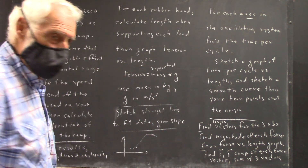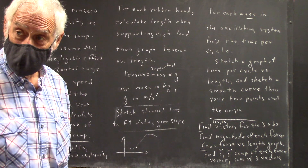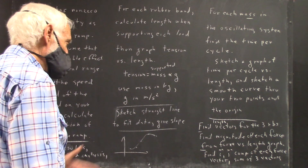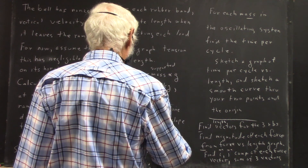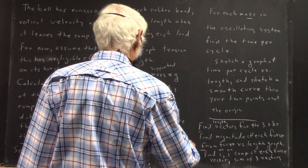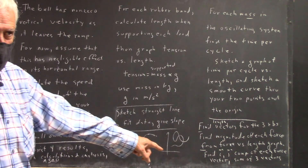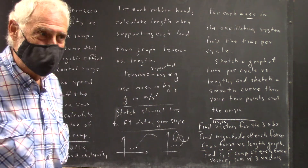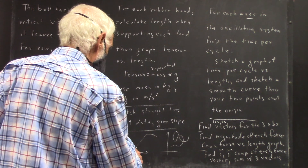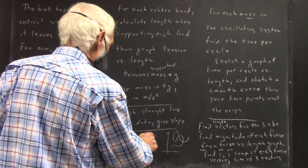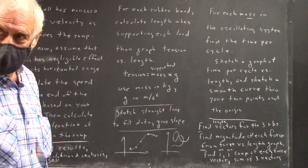The tension is going to be the supported mass times the acceleration of gravity. You want to use mass in kilograms and acceleration of gravity in meters per second squared, and you can use g = 10. We can always take off 2% if we need to to get 9.8.